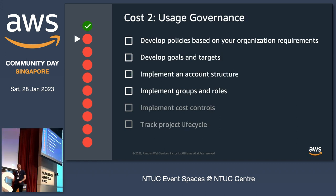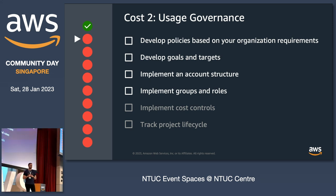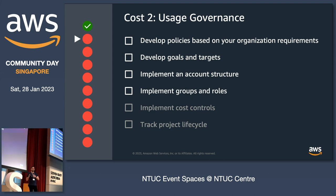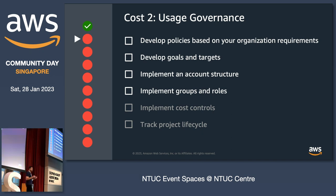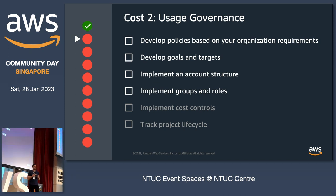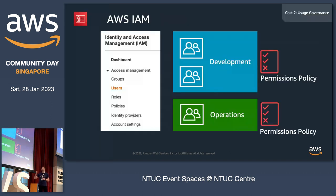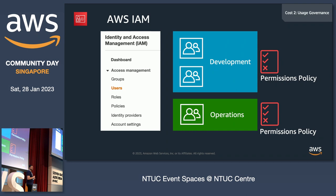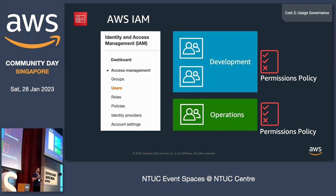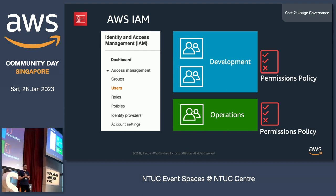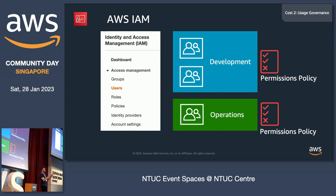Next is governance. You can't really be cost optimized if anybody can just go ahead and create stuff. You need to develop policies that segregate what kind of permissions different teams have. A good example is development teams versus operations teams — operations might have wider permissions to maintain the environment, while development teams may only access the resources their application runs on. Identify your business requirements, create groups, and use AWS Identity and Access Management to create users, groups, and associate the right policies.